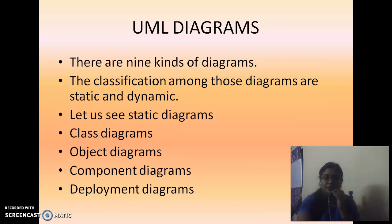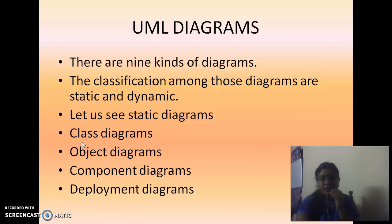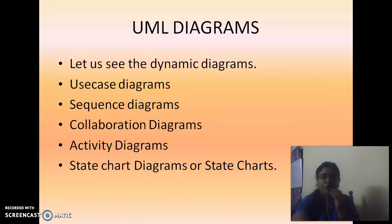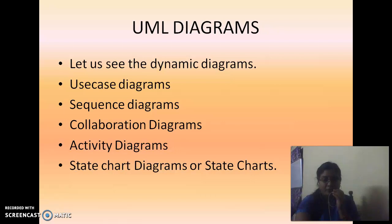Static diagrams, once created, do not change. Dynamic diagrams are ever-changing. The static diagrams include class diagrams, object diagrams, component diagrams, and deployment diagrams. The dynamic diagrams include use case diagrams, sequence diagrams, collaboration diagrams, activity diagrams, and state chart diagrams. Note that sequence and collaboration diagrams are collectively called interaction diagrams.